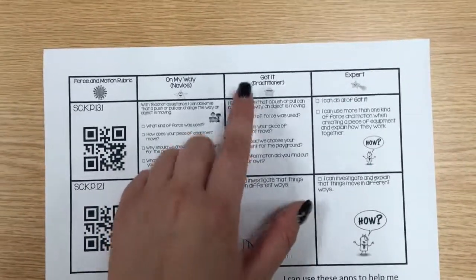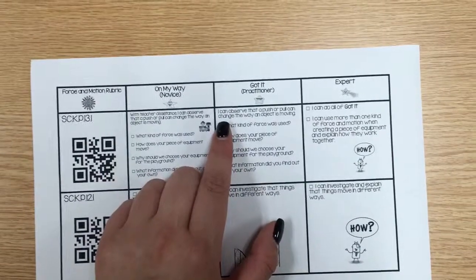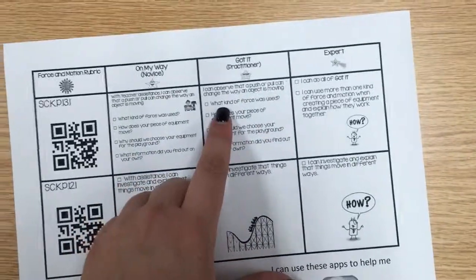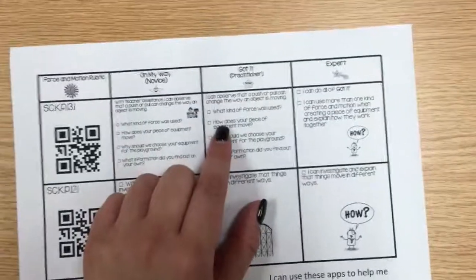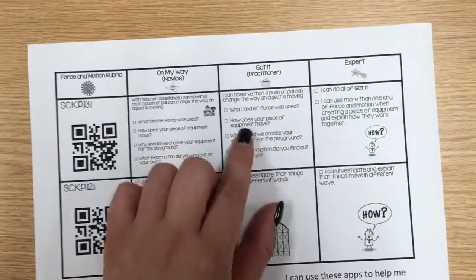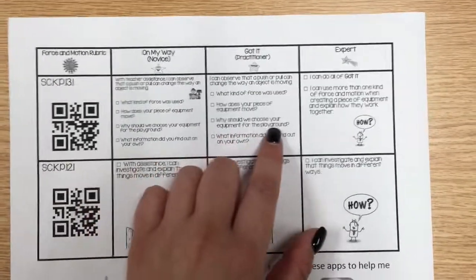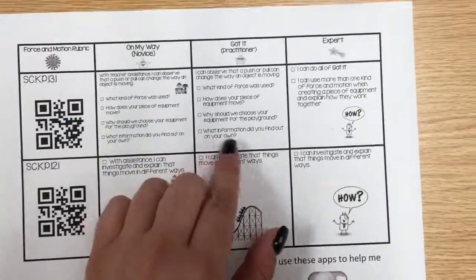In order to be got it or a practitioner, I can observe that a push or pull can change the way an object is moving. You need to tell what kind of force was used, how does your piece of equipment move, why should we choose your equipment for the playground, and what information did you find out on your own.